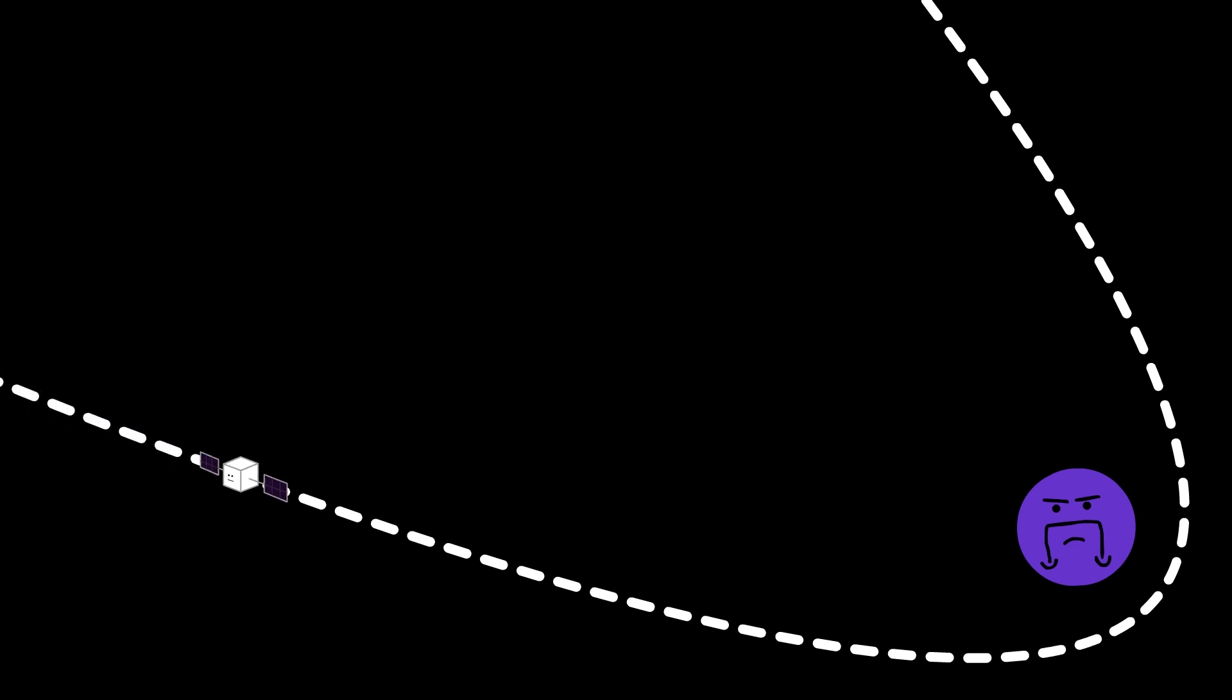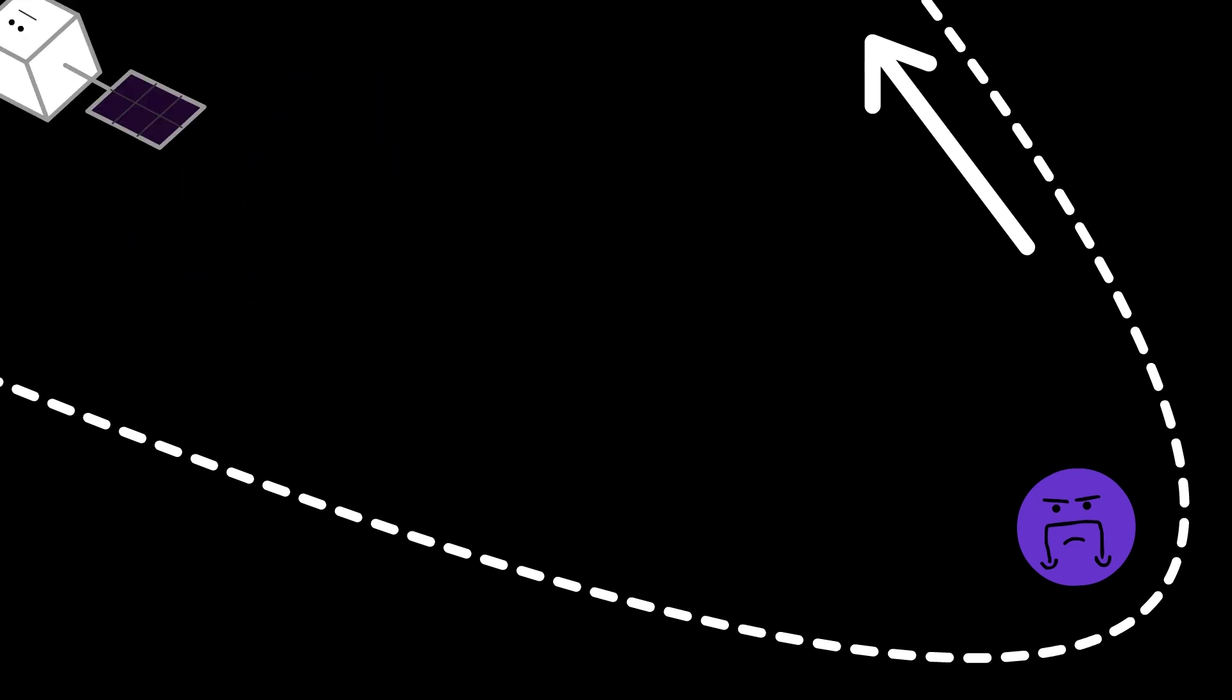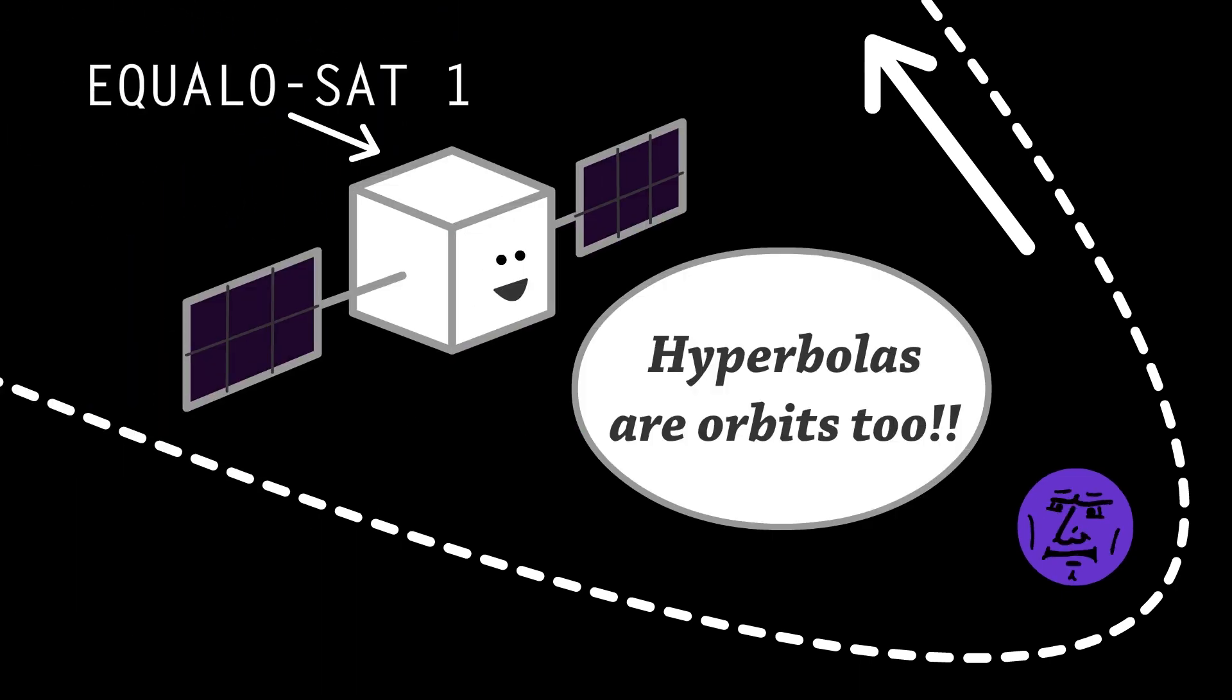Lastly, a parabolic orbit is one that an object follows when it is on an escape trajectory from a body. In other words, an object will follow a parabolic orbit if it has enough speed to escape a body's gravitational influence or its gravitational grip. Hyperbolic orbits are a thing too, but they are almost exactly the same as parabolic orbits.